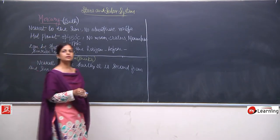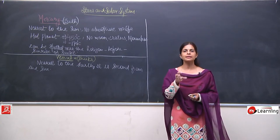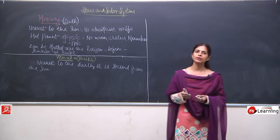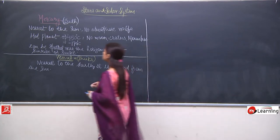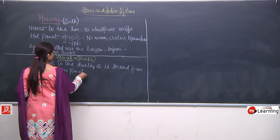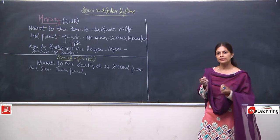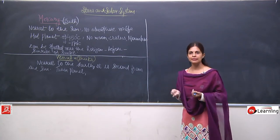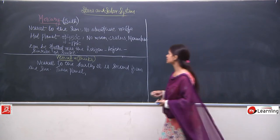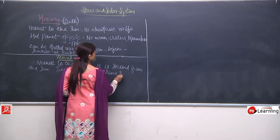This planet is also known as the twin planet. When we talk about the Earth and Venus together, we can say these are twin planets because the size of both the Earth and Venus is almost the same. That is why it is known as the twin planet — almost the same size.